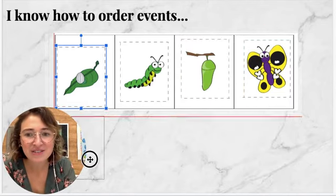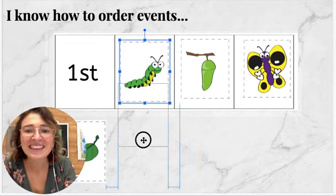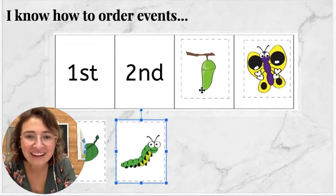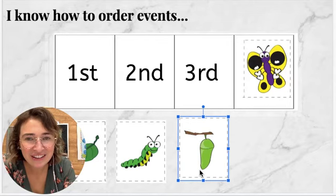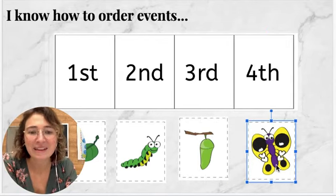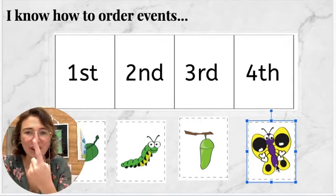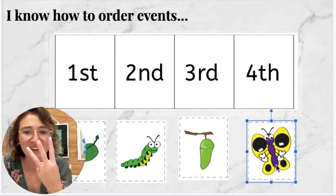First was the egg. Then the caterpillar. Then the cocoon. And then the butterfly. First, second, third, fourth.